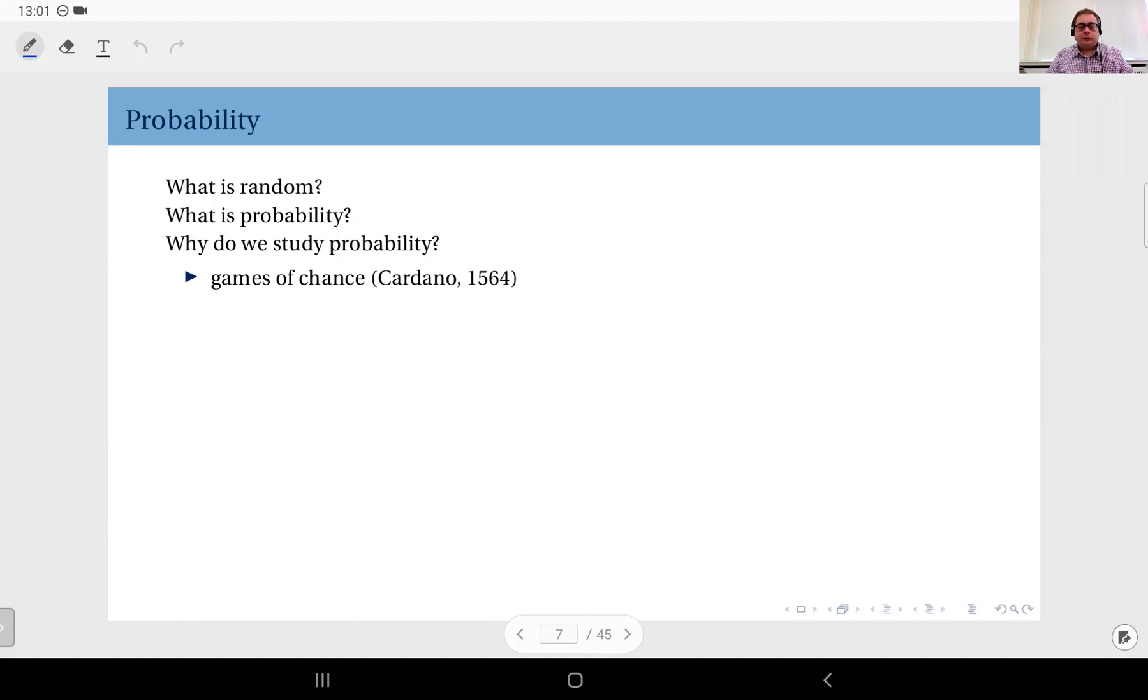Therefore, Cardano's book mostly consists of applications of probability to die games and some strategies to use to come out favorably out of certain games. So it started with gambling; it's really fair to say that the study of probability theory started with gambling, actually.